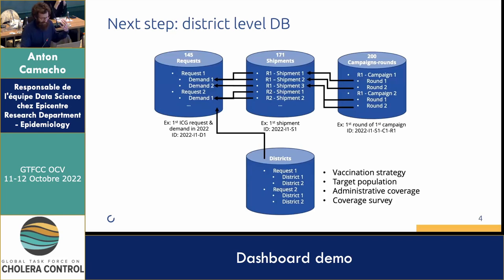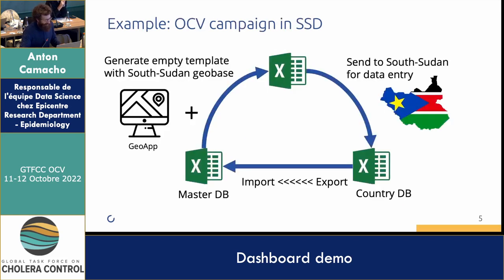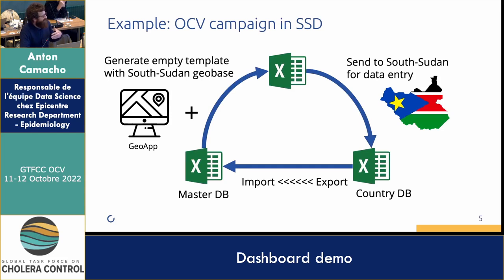It's very difficult to enter all this information from a central place, so what Malika started — and we are going to make more formal — is this idea of decentralized data collection. When doses are sent to a country, they come with a simple Excel spreadsheet so that the country can enter the data about the campaign and then send it back to Malika, who will import this data into the master database. That way, the dashboard will show all this data for all the countries.